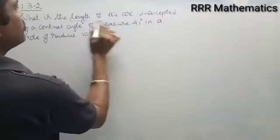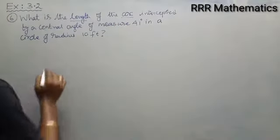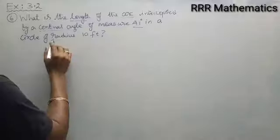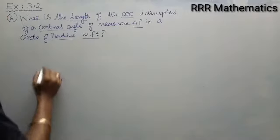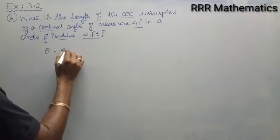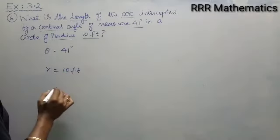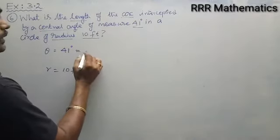You want to find out the length of the arc where the central angle theta is given as 41 degrees and radius is 10 feet. So your theta will be 41 degrees and your radius will be 10 feet.